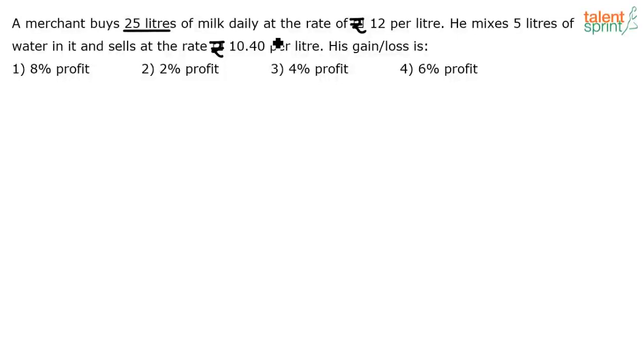A merchant buys 25 liters of milk daily at the rate of ₹12 per liter. He mixes 5 liters of water in it and sells at the rate of ₹10.40 per liter. His gain or loss is? So look at the question again.